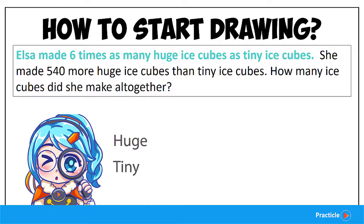Let's read the sentence again, shall we? Elsa makes six times as many huge ice cubes as tiny ice cubes. Here's the first 'as' — and this is the first object.